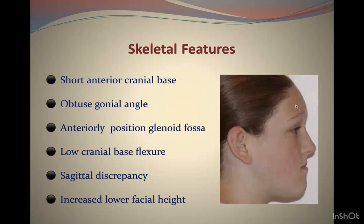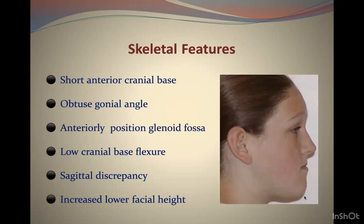Additional features include a low cranial base flexure — the angle at the sella between nasion and gonion is very open. There is sagittal discrepancy visible as a mesial step, and an increase in lower facial height. These are the classic skeletal features of Class 3 malocclusion.